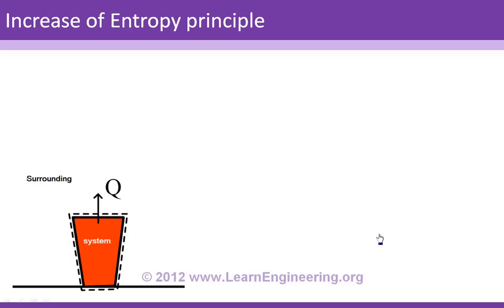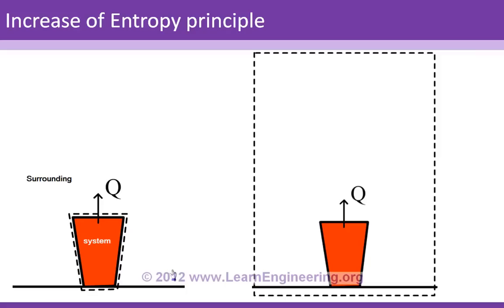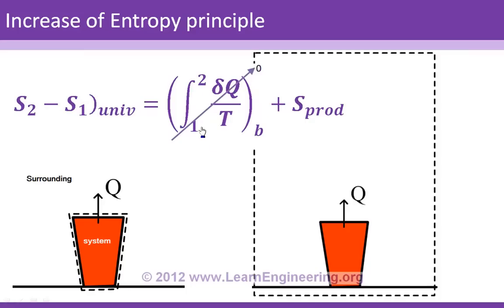We can derive a very useful form of the second law. If you analyze the system and its surroundings together — treating the universe as a whole — there is no heat transfer across the universe boundary, so the entropy transfer term disappears. The result is: the entropy change of the universe equals entropy production, which is always positive. Therefore entropy of the universe always increases during a process. This is the increase of entropy principle: ΔS_system + ΔS_surroundings ≥ 0.